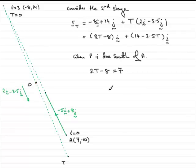And from this, we can solve it for T. By adding 8 to both sides, we get 2T equals 15. And then dividing both sides by 2 gives T equal to 7.5.